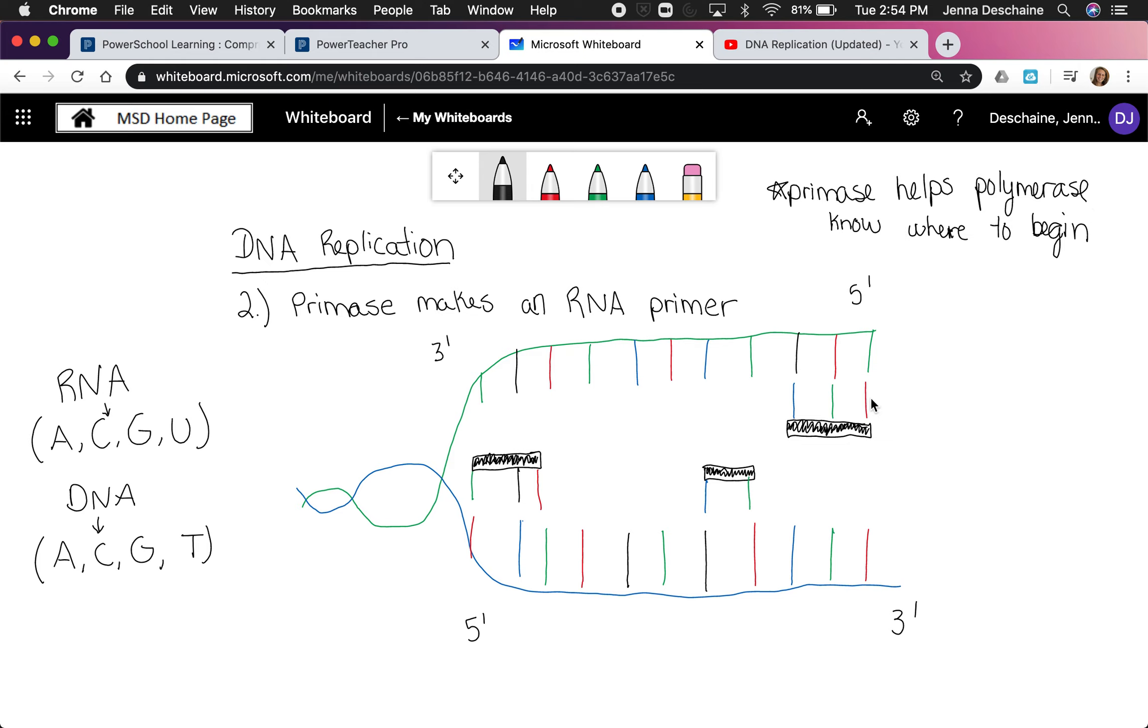These black boxes right here with some bases attached, these are the RNA primers. This is also an RNA primer, and this one is also an RNA primer. These guys are going to help DNA polymerase know where to go once DNA polymerase gets into the picture.